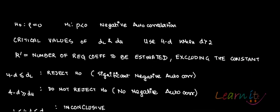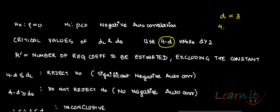Similarly, you can test for negative autocorrelation. The null hypothesis is ρ = 0 (no negative autocorrelation) and the alternative is ρ < 0. Again, find D_L and D_U. If D > 2, this indicates negative autocorrelation and you use 4 - D instead of D for comparison. For example, if D = 3, you use 4 - 3 = 1 and compare this value with D_L and D_U from the table.